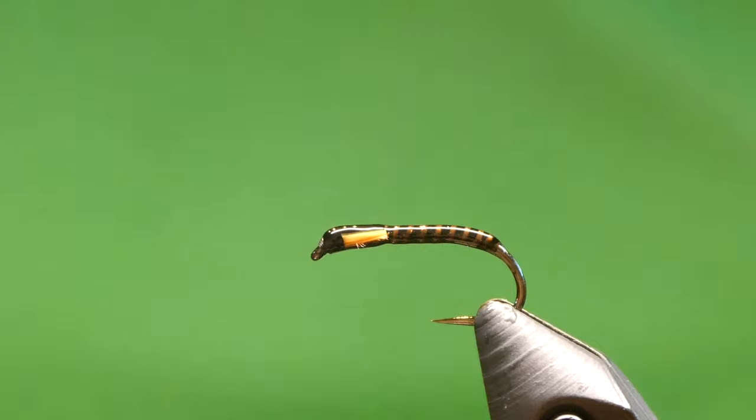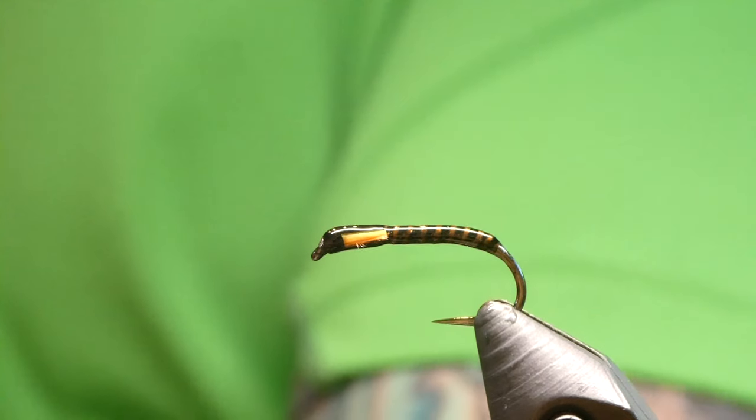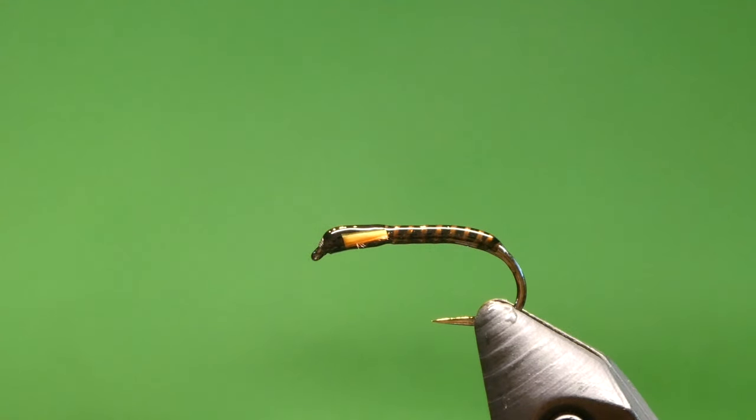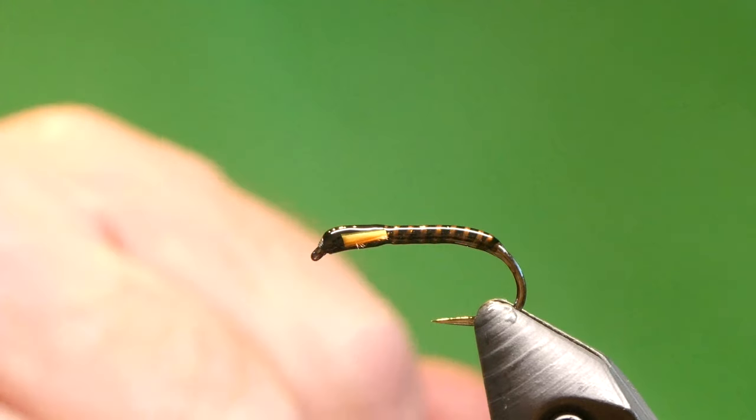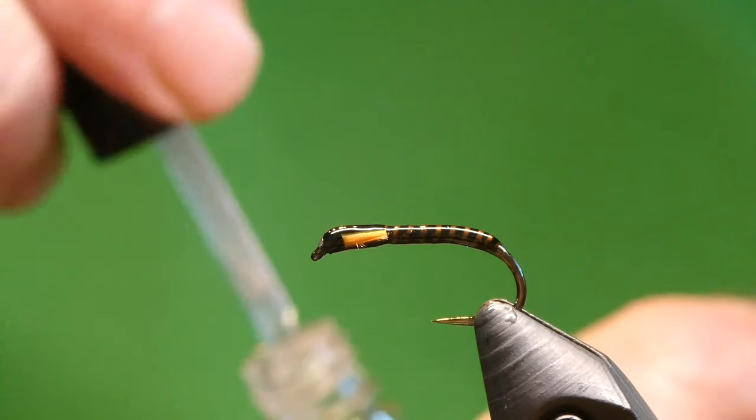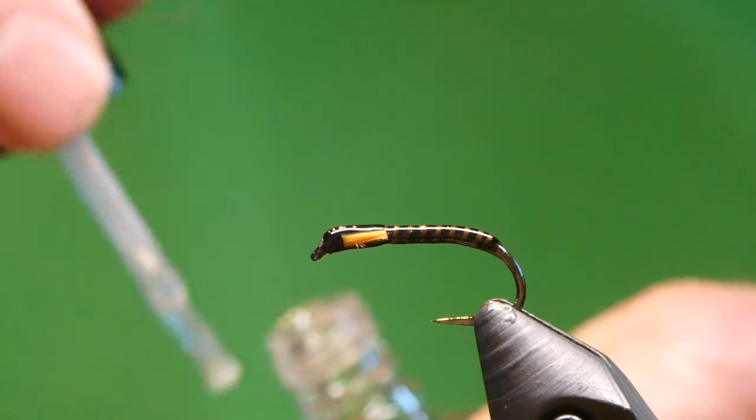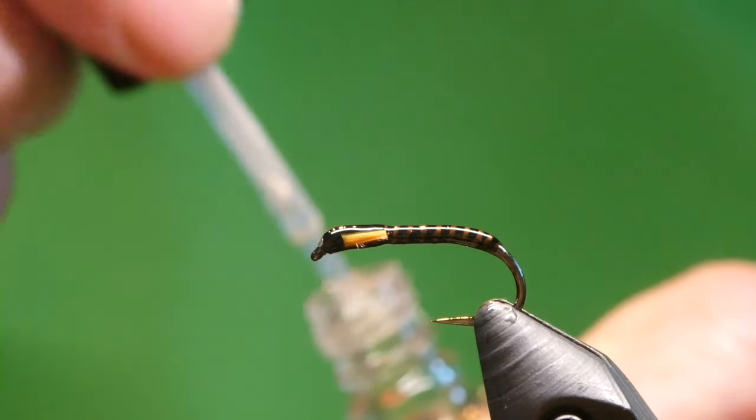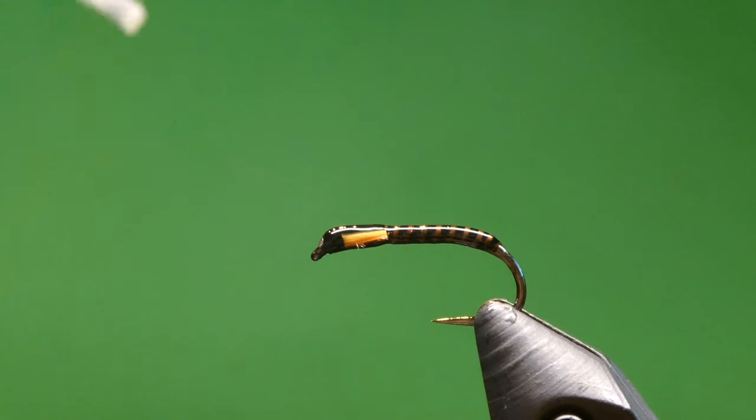And what I generally do now is just get a very fine coat of hard as nails, just to take any tackiness away. Just brush all the excess off the brush and just get a light coat.